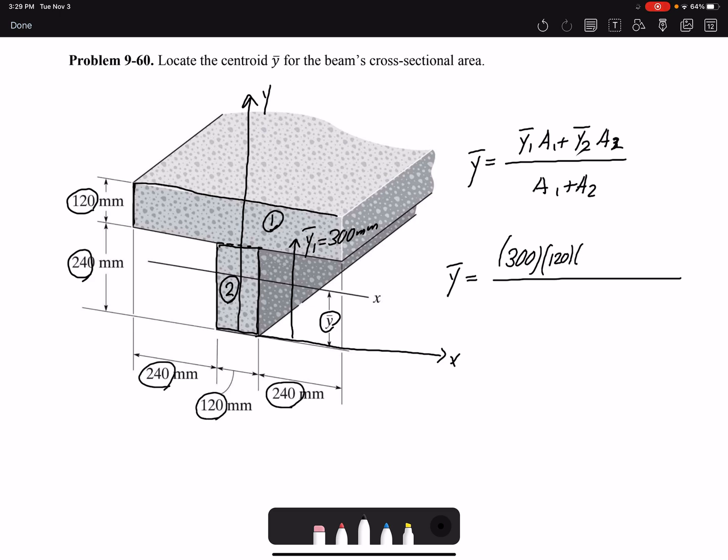I go to Y bar 2. Y bar 2 would be again in the middle of our rectangle. The height is 240, so half of that would be 120. So Y bar 2 would be 120 millimeters.